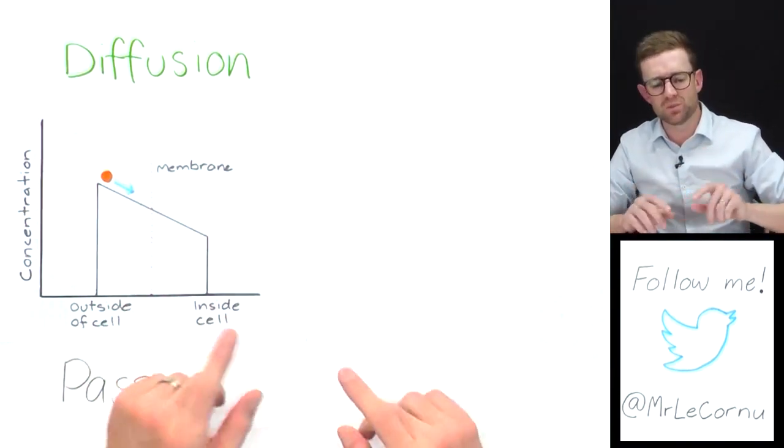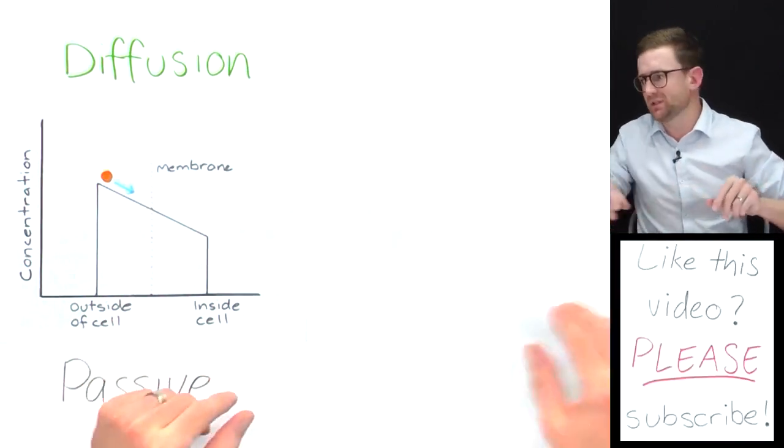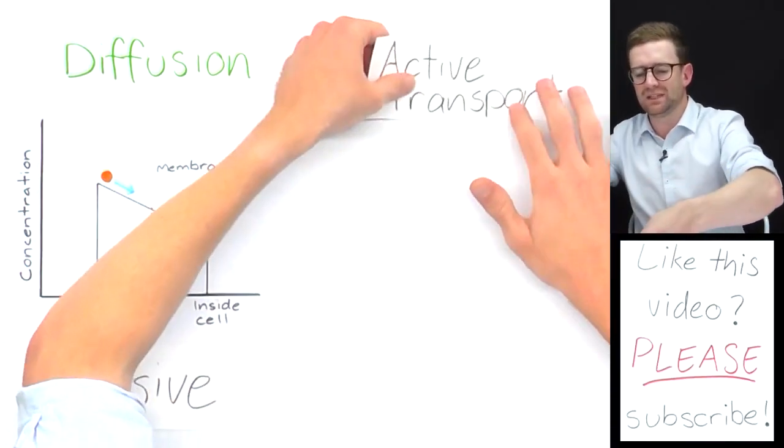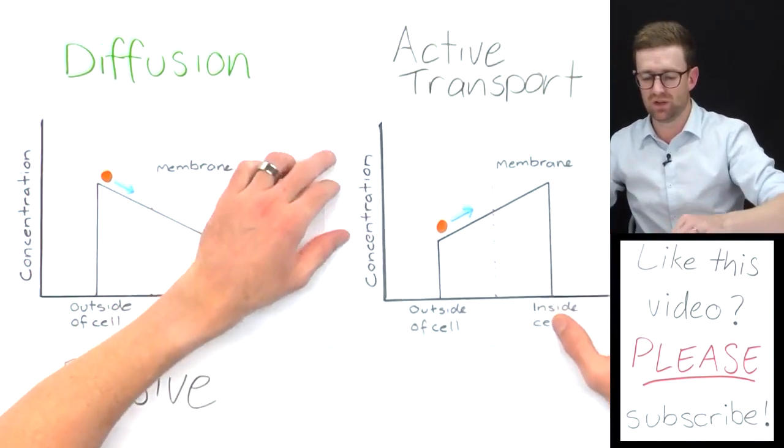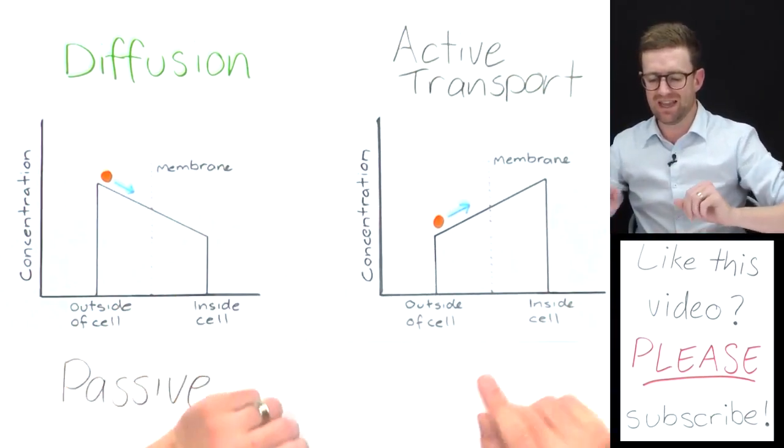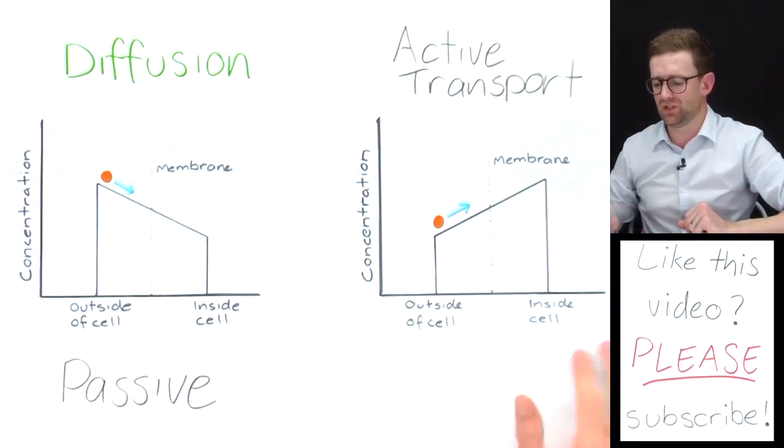But active transport is, as I said, the opposite of diffusion. In active transport, the cell is actually trying to move substances against a concentration gradient.